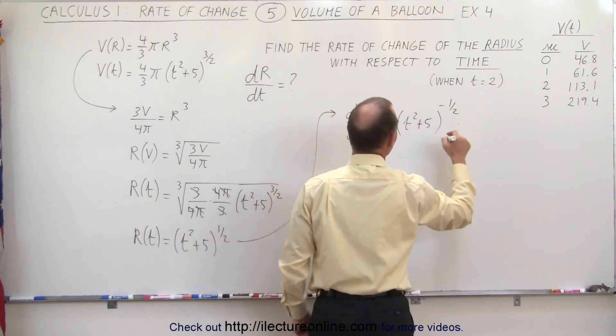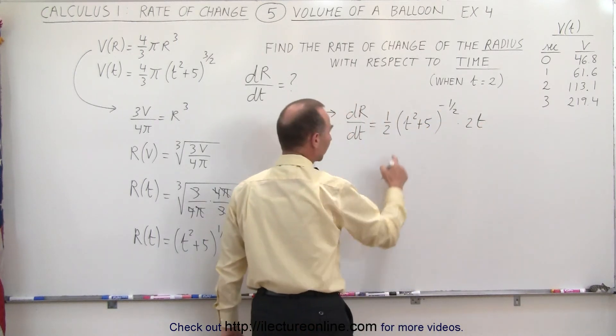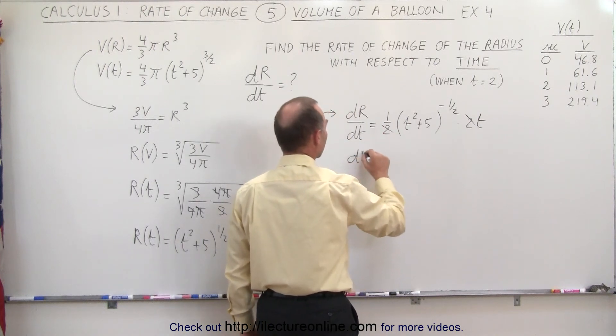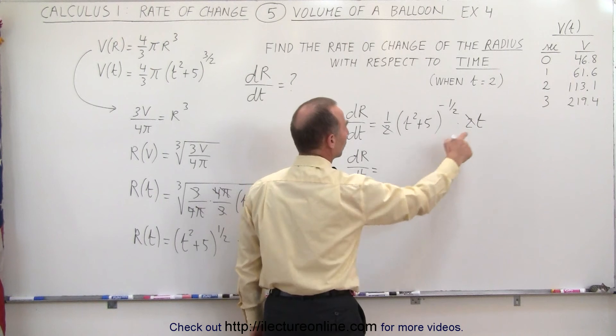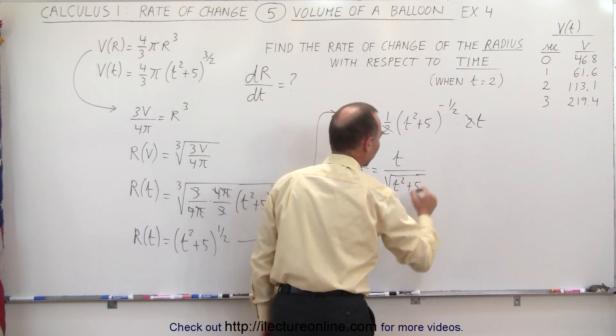times the derivative of what's inside, which would be 2t. Now, we can see here that this 2 will cancel out this 2, and we have dr/dt is equal to, we have a t in the numerator, and the square root of t² + 5 in the denominator.